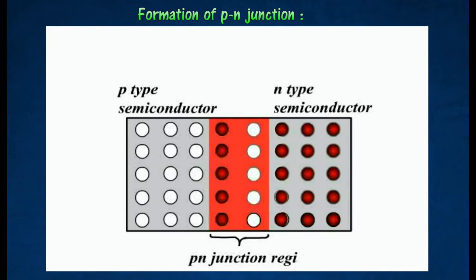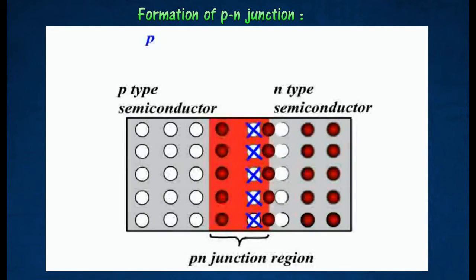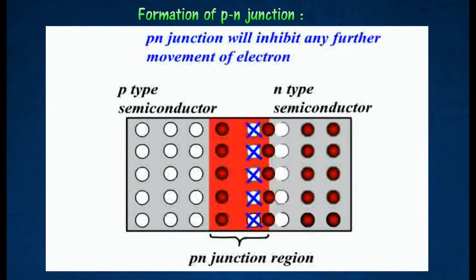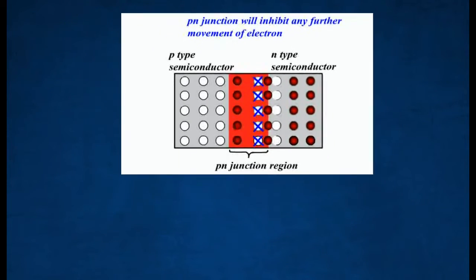This causes a region across the junction to be depleted in carriers of current. This region is called the depletion layer because it has been depleted in majority carriers. The depletion zone is a few micrometers thick and, since it has no majority carriers, it acts as an insulating barrier.